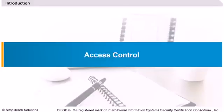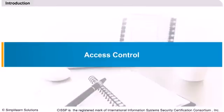The Access Control domain outlines various information system security options that control access to an organization's information and data processing resources. In other words, this domain covers mechanisms like authentication, biometrics, etc., by which a system grants or revokes the right to access data or perform an action on an information system. The term access control basically means that we want to ensure that people and other entities, like services and processes, must be identified and authenticated before they are allowed to access the system or perform any action on the network.